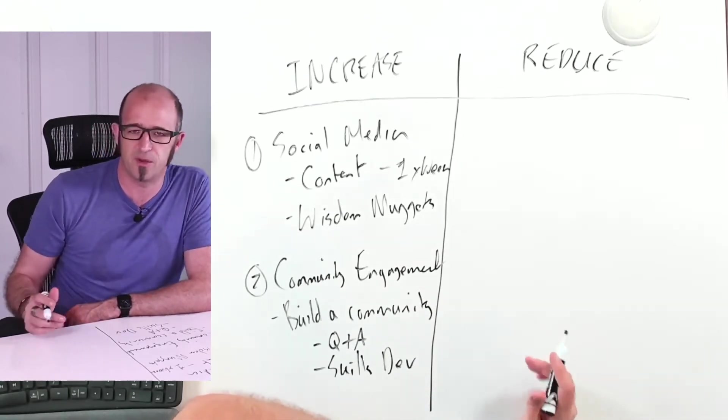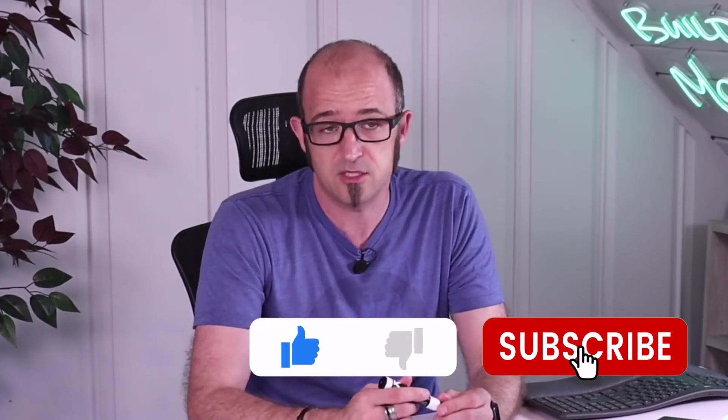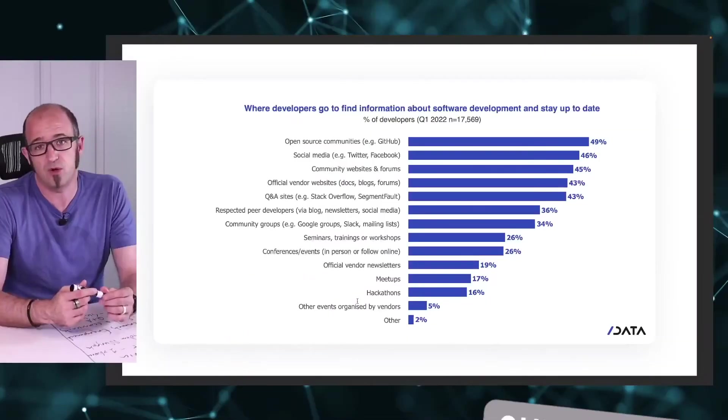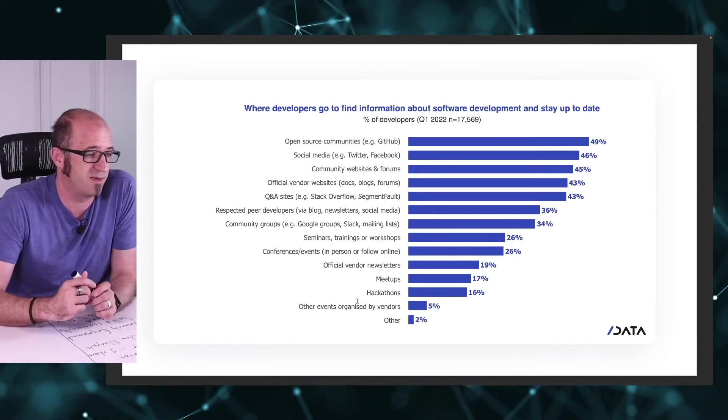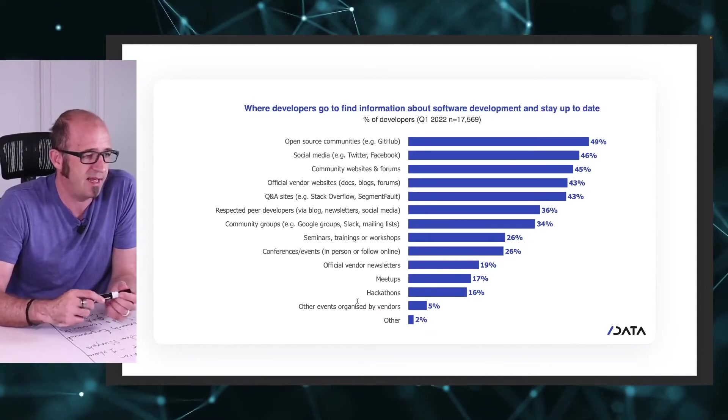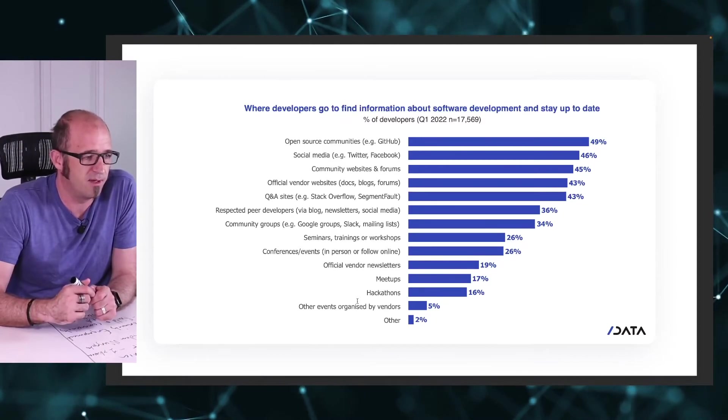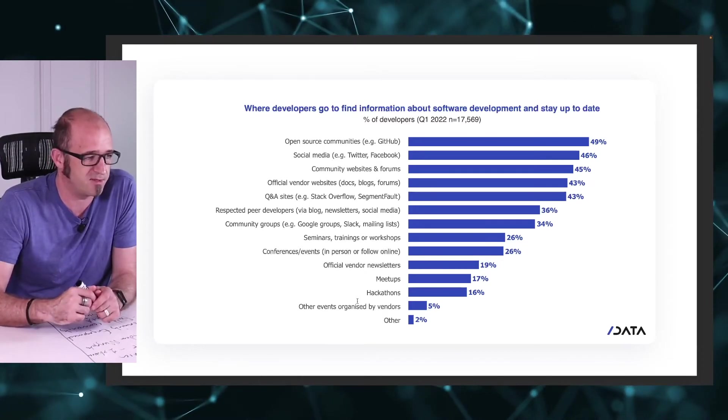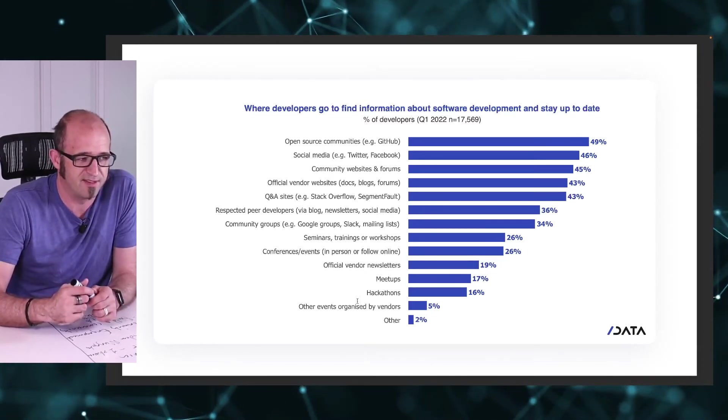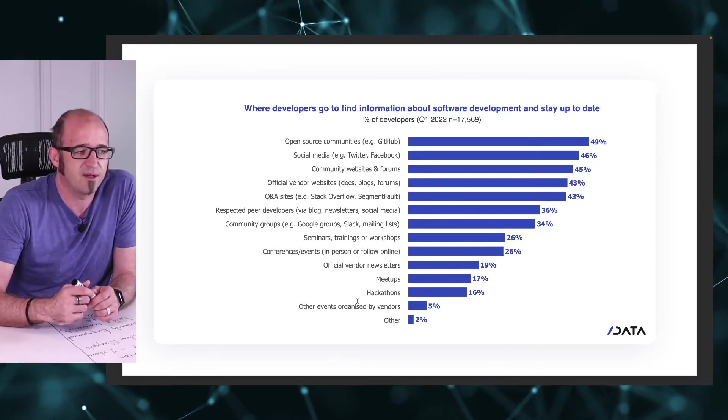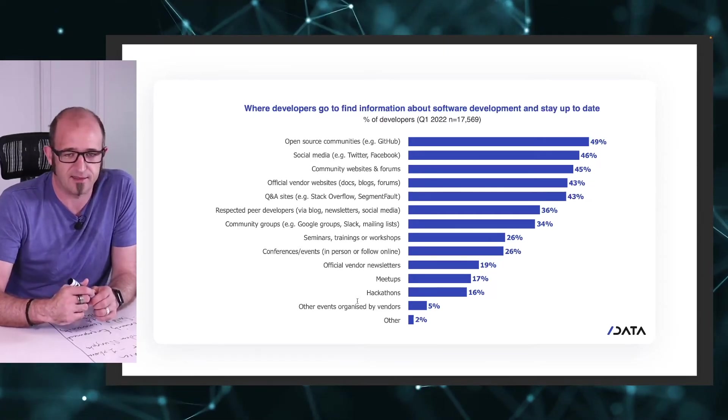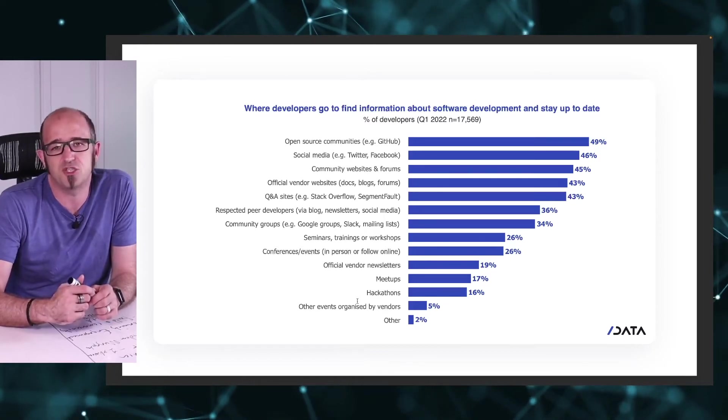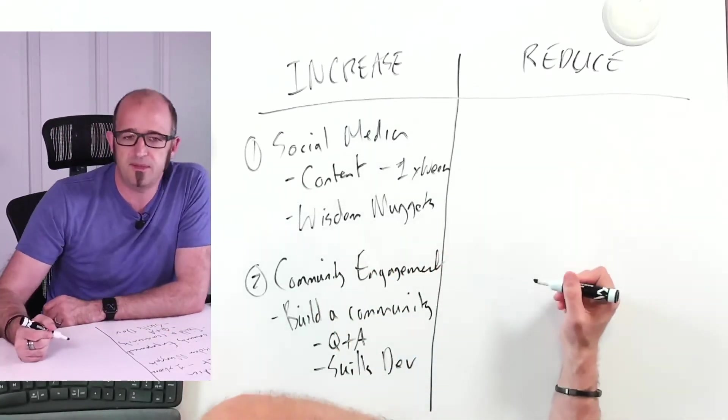But now you're probably thinking, all right Jono, that all sounds pretty good, but what do you want me to reduce? What shouldn't I be doing? Well, as with many things in life, what I like to do is look at the data. If we go over and look at the data right here from Slashdata, what you can see is that right at the bottom, we've got Other, chicken nuggets as a bad way to stay up to date. Other events organized by vendors. So vendor events, not particularly interesting. Hackathons, meetups, official vendor newsletters, things like that. These are the things that I, as a general rule, would recommend you maybe steer clear from.